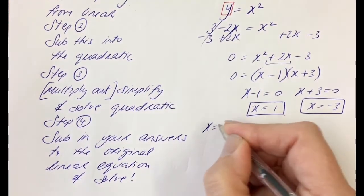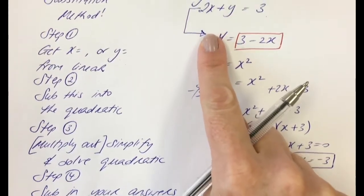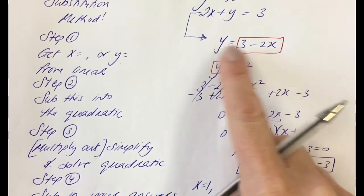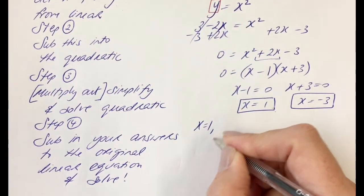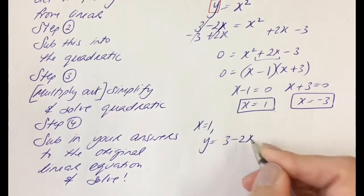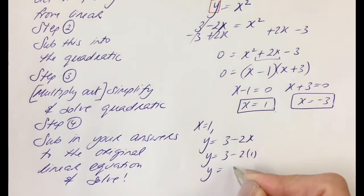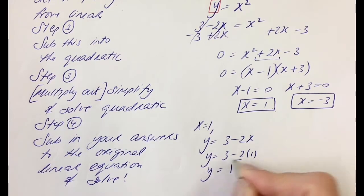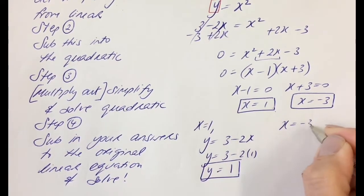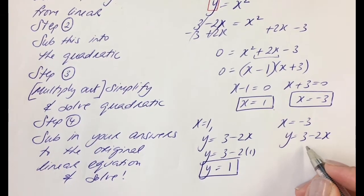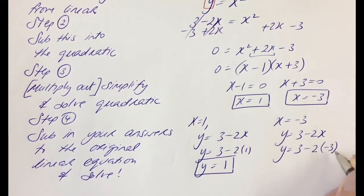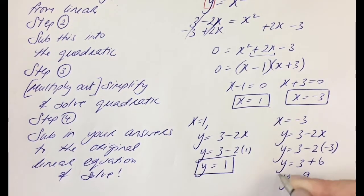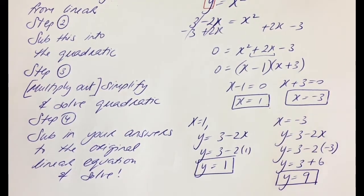When x is 1, subbing into y equals 3 minus 2x gives y equals 3 minus 2, which is 1. So when x is 1, y is 1. When x is minus 3, subbing in gives 3 minus 2 times minus 3, which is 3 plus 6, so y equals 9. When x is minus 3, y equals 9.